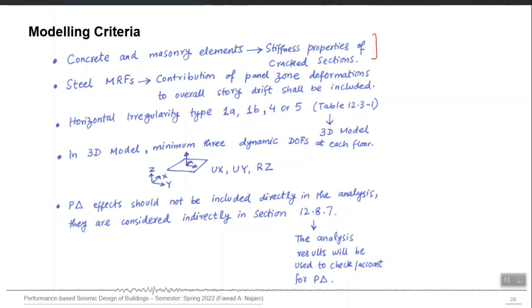Steel moment resisting frames, if there are, then you should consider the panel zone deformations to overall story drift. Panel zone means the areas where beams and columns are overlapping. Those areas, the deformation of those zones actually should be included in the analysis.